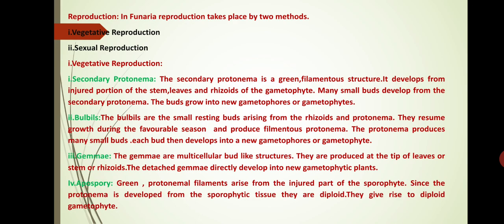Next we discuss about reproduction in Funaria. Reproduction takes place by two methods: vegetative reproduction and sexual reproduction. First we discuss about vegetative reproduction. The first method is secondary protonema. The secondary protonema is a green filamentous structure. It develops from the injured portion of the stem, leaves and rhizoids of the gametophyte. Many small buds develop from the secondary protonema. The buds grow into new gametophores or gametophytes.